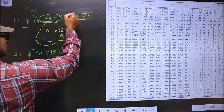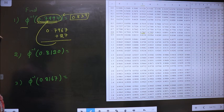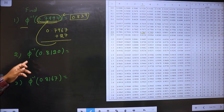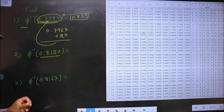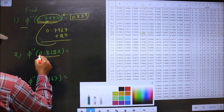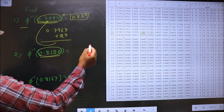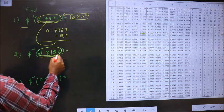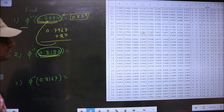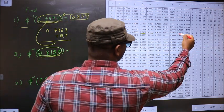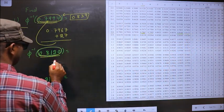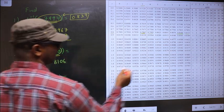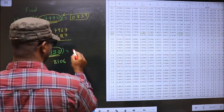So this is your answer: 0.839. Next, phi inverse of 0.8120. We should find phi inverse of this. So now you look for a value closer to this over here. Closer to 0.8120, it lies between these two numbers. You take the smaller one: 0.8106. This is present for 0.88.